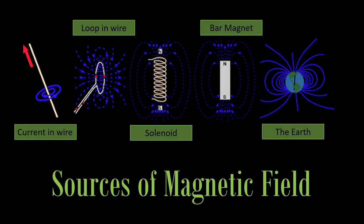We have here the sources of magnetic field. First is the current in wire. Second is the loop in wire. Third is the solenoid. Fourth is the bar magnet. And fifth is the Earth.